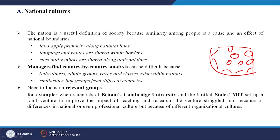Similarities can link groups from different countries, so it is important to focus on the relevant groups. For example, when scientists at Britain's Cambridge University and the US MIT set up a joint venture to improve teaching and research, the venture struggled — not because of differences in national or professional culture, but because of different organizational cultures. The organizational cultures at Cambridge and MIT were so different that they clashed.